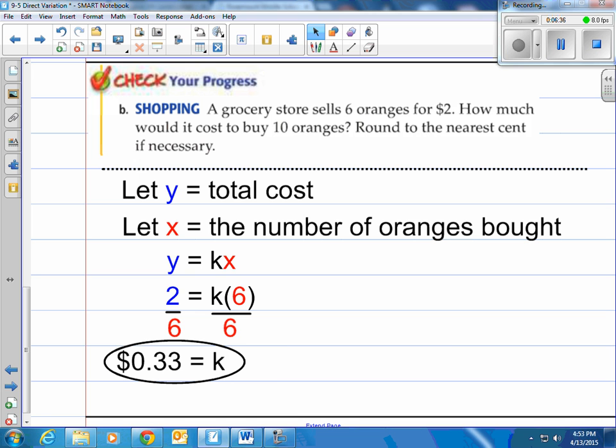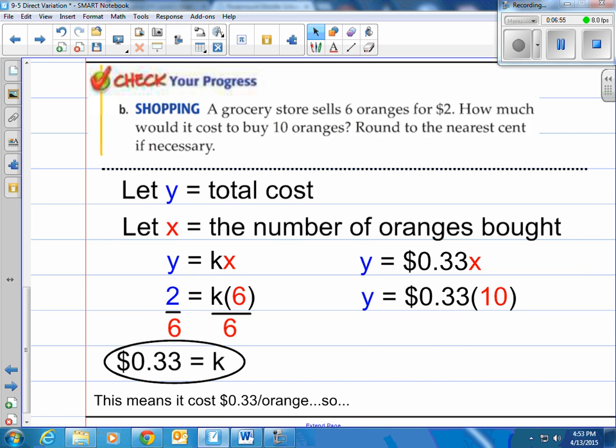What that says is for one orange it'll cost you 33 cents. So knowing that now we can calculate the 10 oranges. Write down our equation. But we replace the 0.33, the 33 cents in for the k. That's our constant variation. So we take the 33 cents, we multiply it by 10 which we have. That's what they want to find out. Then we get 3 dollars and 30 cents. So that is roughly what it will cost. 10 oranges should cost roughly 3 dollars and 30 cents.